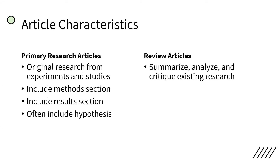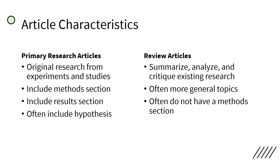Review articles summarize, analyze, and critique existing research — i.e., the primary research studies on a given topic. These review articles can be on a more general topic than a primary research article. For example, whereas a primary research article might study the effects of marine pollution on a specific coastal community in the Bay Area of California, a review article may summarize research done on marine pollution on coastal communities in general. Review articles often do not include a methods section, or state that their method is a type of literature review. And most helpfully when looking at titles while you search, review articles often have the word 'review' in the title.